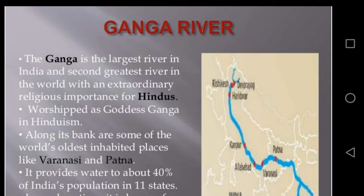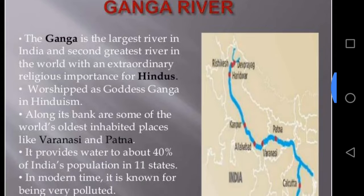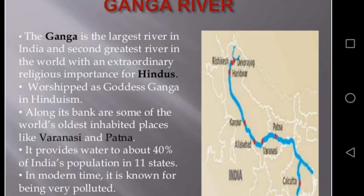The Ganga is the largest river in India and the second greatest river in the world, with extraordinary religious importance for Hindus, worshipped as Goddess Ganga. Along its banks are some of the world's oldest inhabited places like Varanasi and Patna. It provides water to about 40 percent of India's population across 11 states. In modern times it is known for being very polluted.